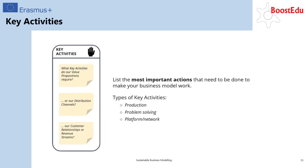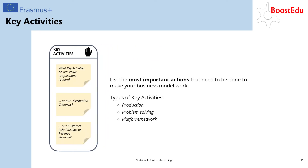The seventh building block are the key activities. Like your key resources, they contain all the important jobs that need to be done to make your business model work. As they form the basis for your value proposition as well as your revenue streams, your key activities should be directly relatable to them. Because if they're not, then something is going wrong, as the activities you view as most important aren't actually delivering value to your customers.